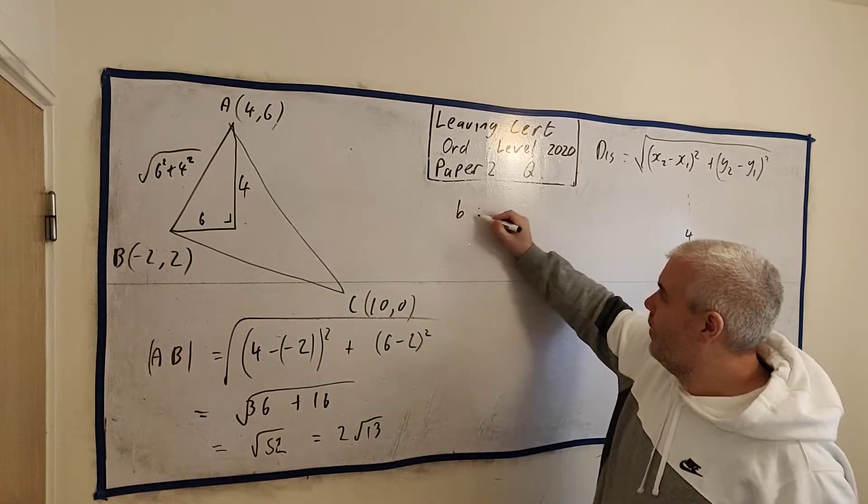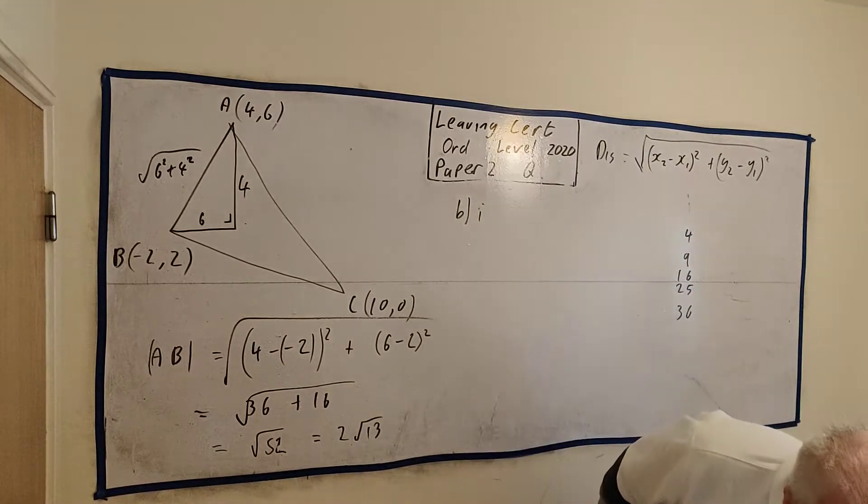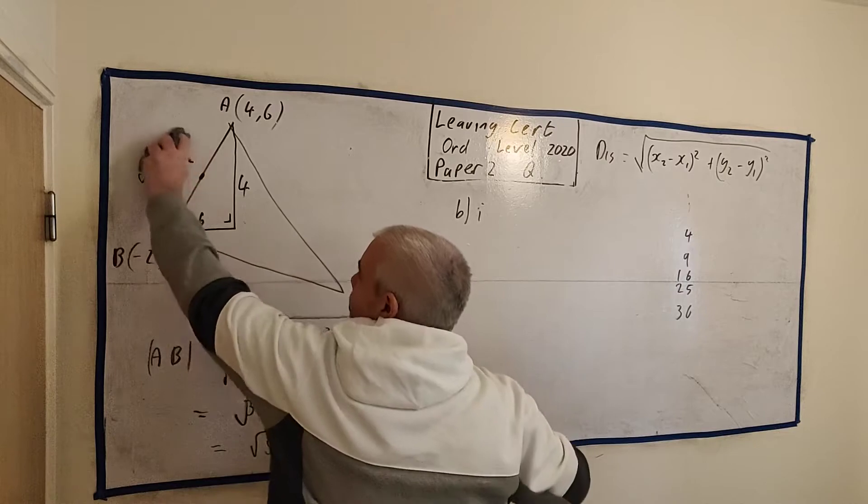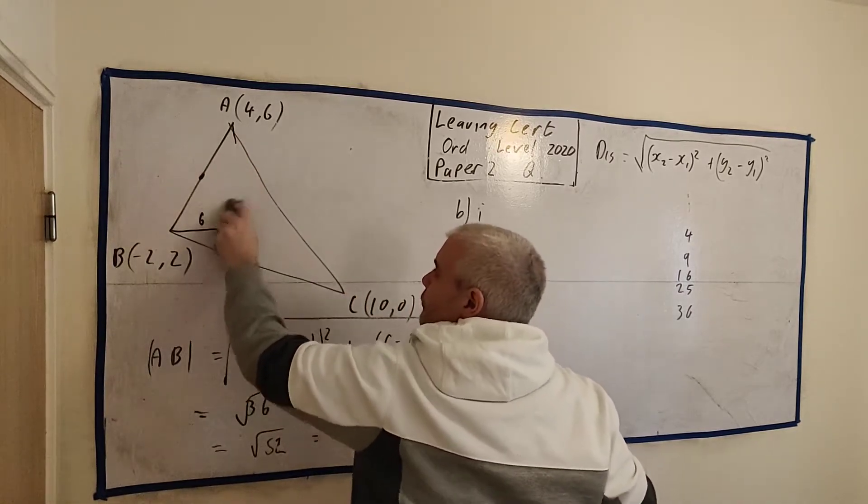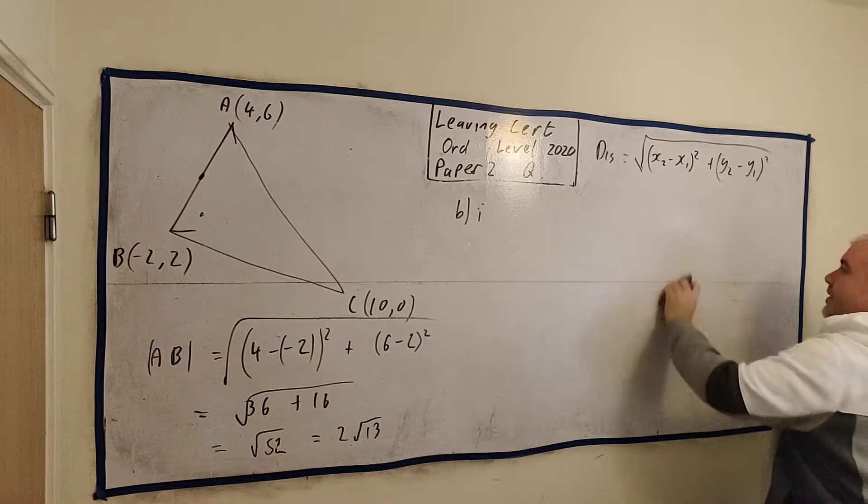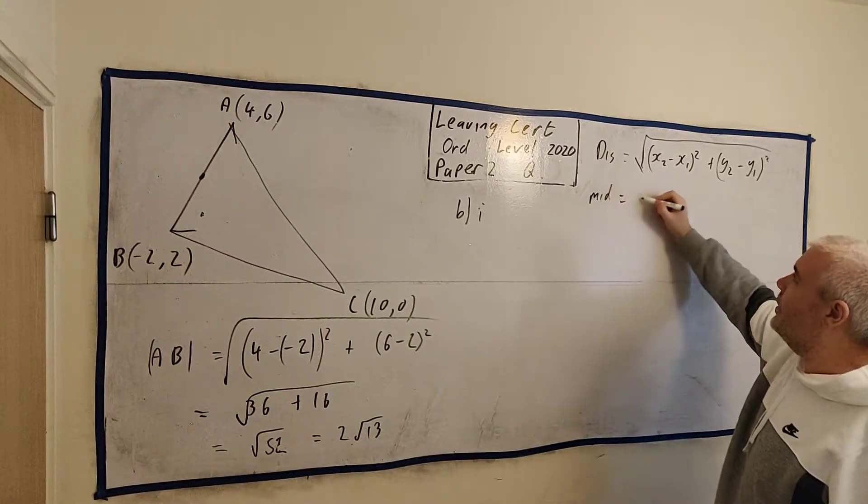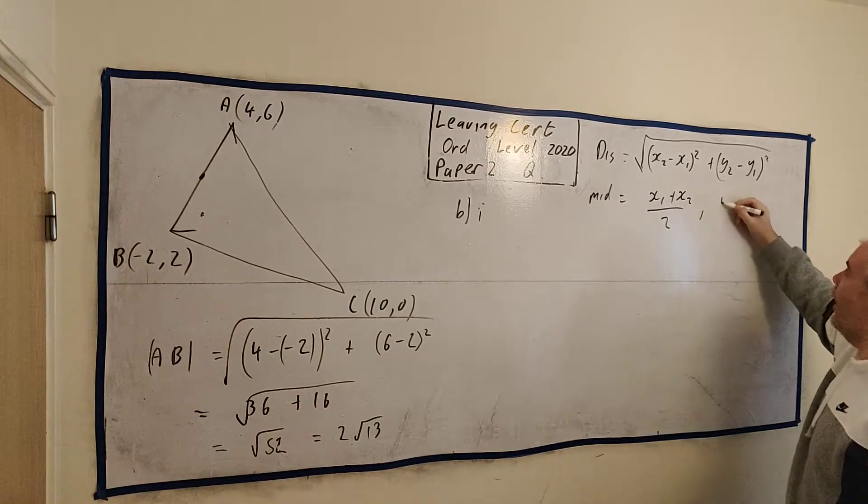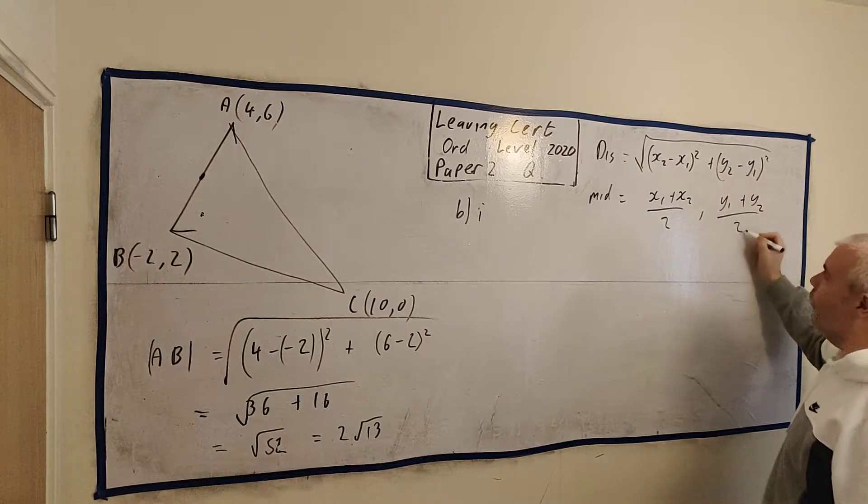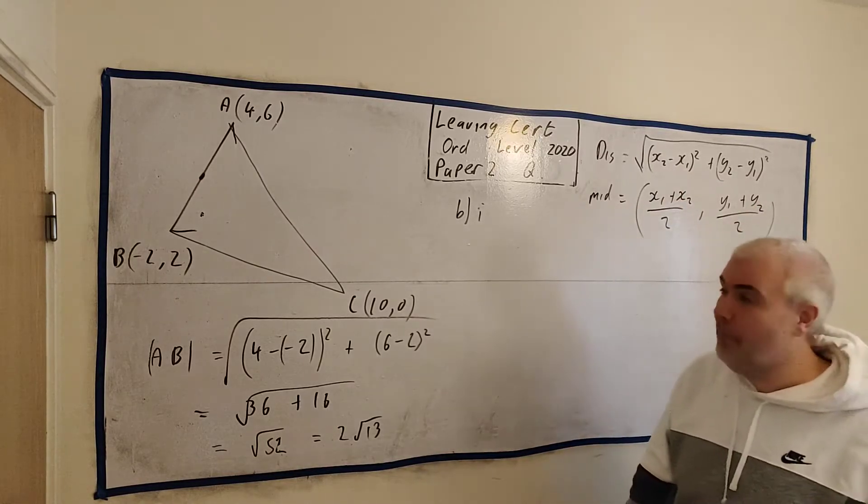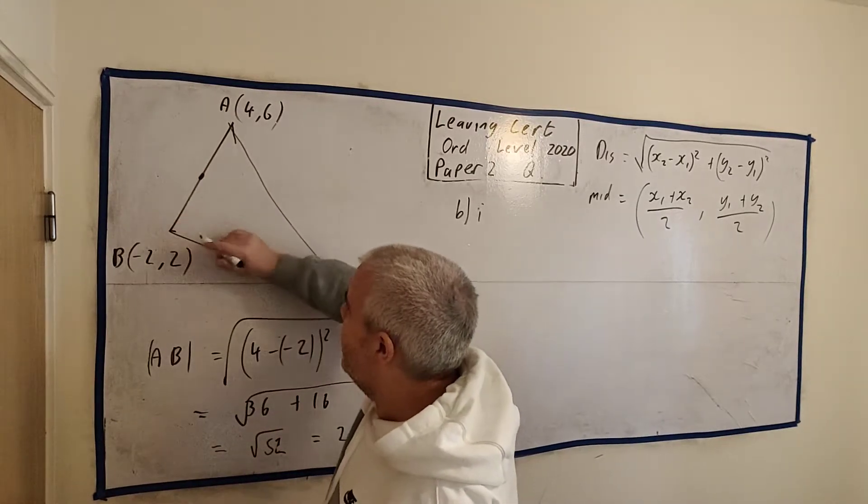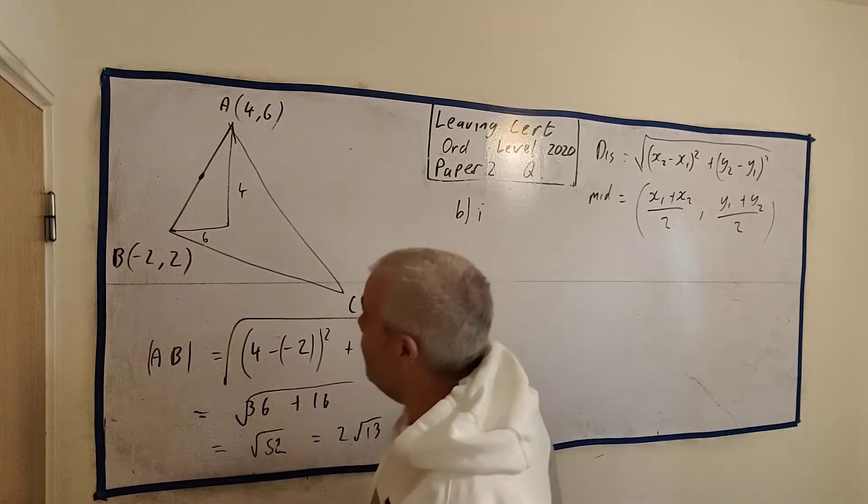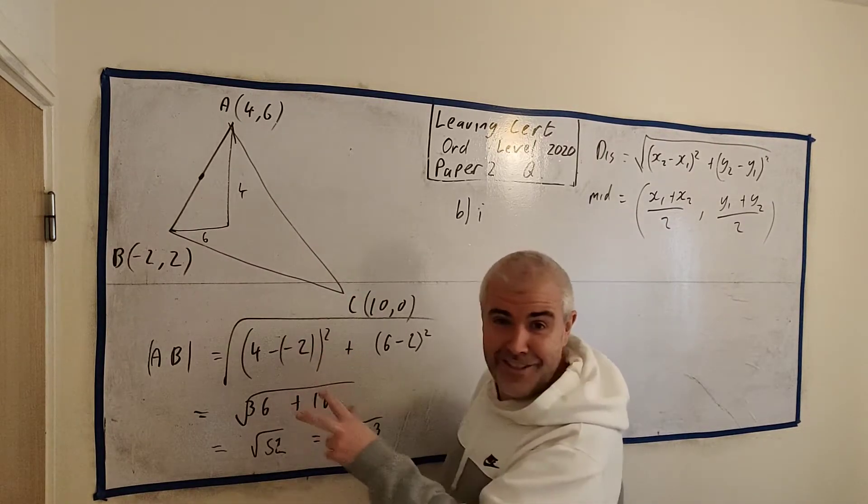Now, let's move on to B part 1. It asks us to find the coordinates of D, the midpoint of A and B. Let me rub that out there. At a midpoint, we have a formula for that. I'll put it up here as well. Midpoint is equal to (x1 + x2)/2 and then (y1 + y2)/2. Go ahead and use the formula. I don't. I think the formula is even sillier.